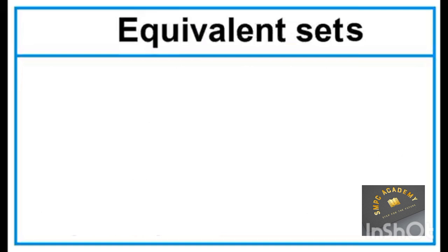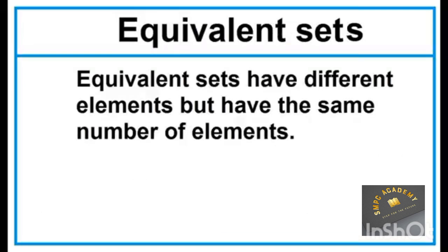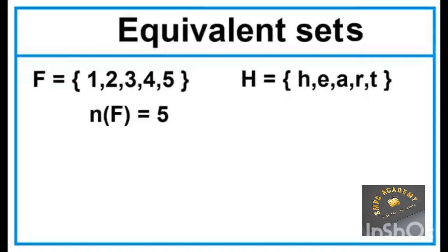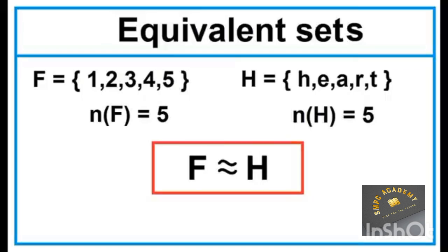Equivalent Sets: equivalent sets have different elements but have the same number of elements. Example — given Set F and Set H, the cardinality of Set F is 5 and the cardinality of Set H is 5. The two sets have different elements but the same number of elements, so Set F is equivalent to Set H.